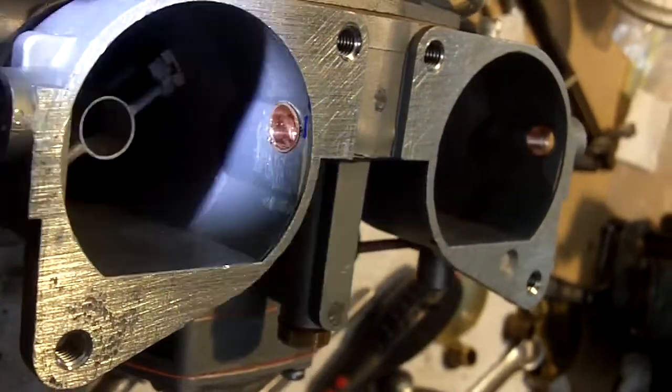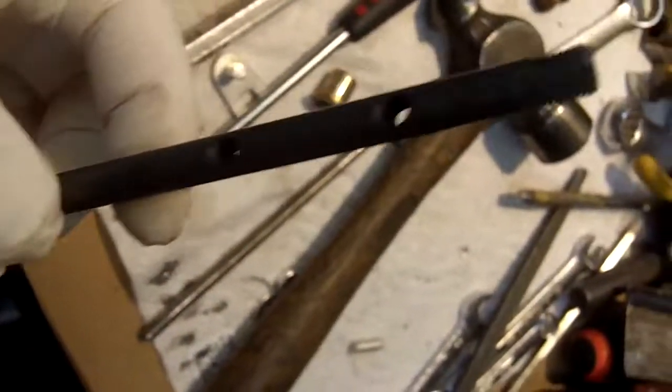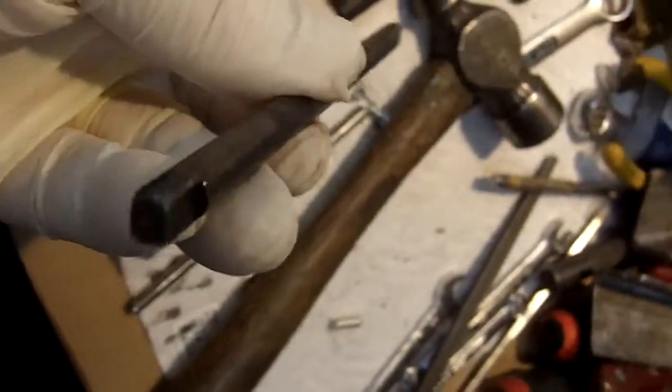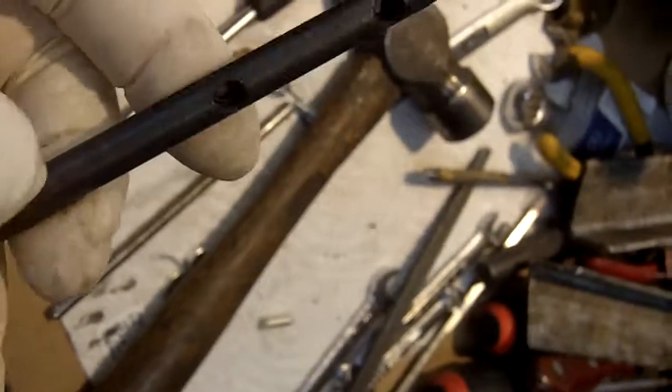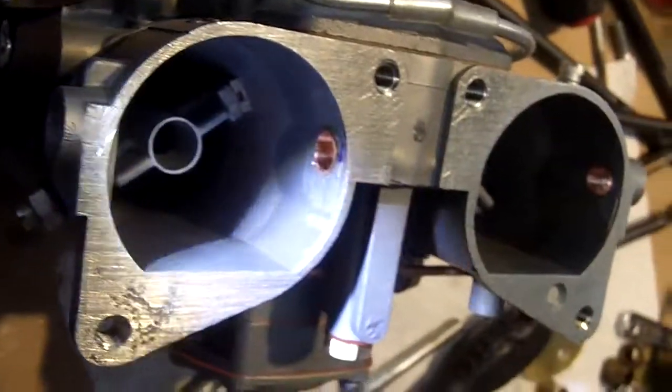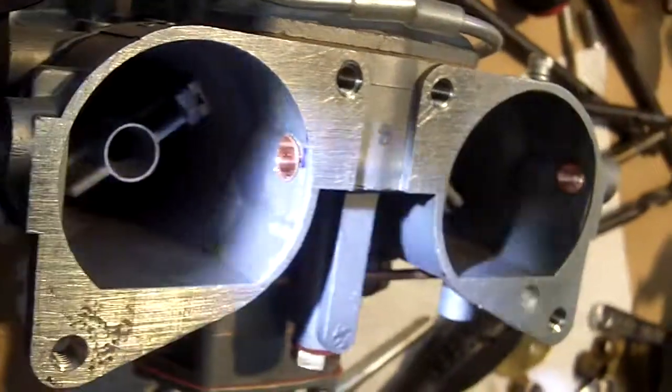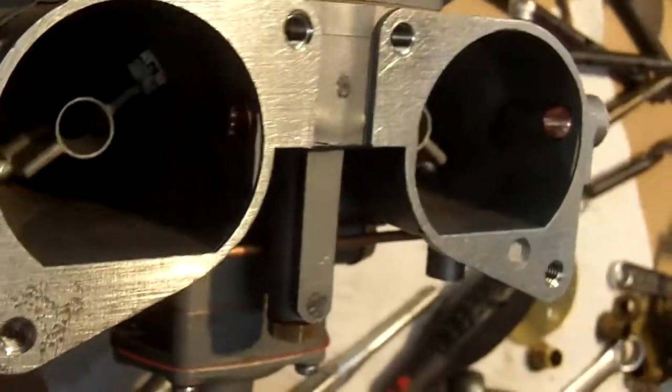Another problem you run into with these choke shafts is they are not straight, they are not true. If you put them on a flat machine surface and roll them, you'll see that they're very crooked. So they have a great deal of slop in these holes in order for those choke shafts to work properly and turn smoothly.